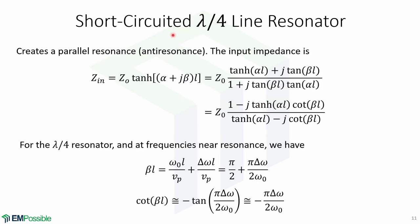Now let's look at the short-circuited quarter-wavelength line resonator. This transmission line creates a parallel resonance or anti-resonance. The input impedance, again assuming a lossy transmission line, is given by this expression. Using trigonometric identities, we can rewrite it in this form, and rewrite it again for easier manipulation.